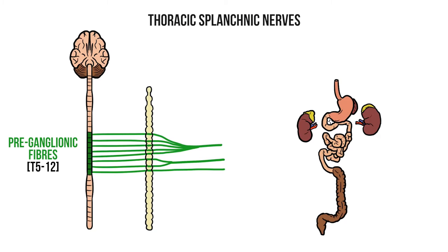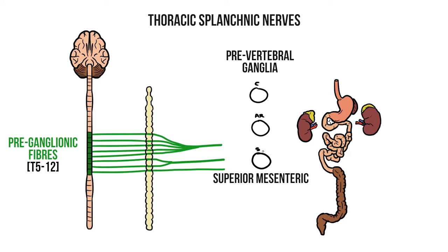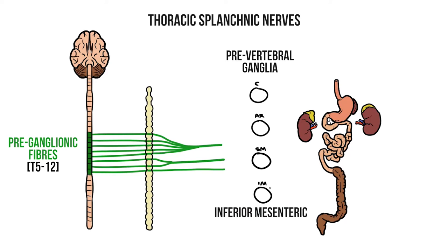For this video I'll only be looking at four of these ganglia. Superiorly we'll have a celiac ganglion, then an aorticorenal ganglion below this. Next will be a superior mesenteric ganglion, and then finally an inferior mesenteric ganglion.